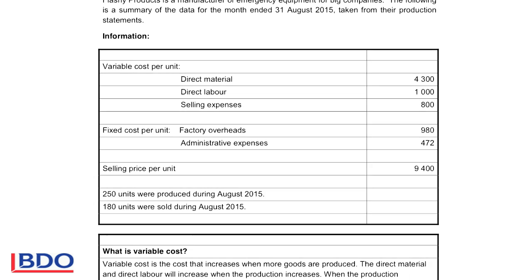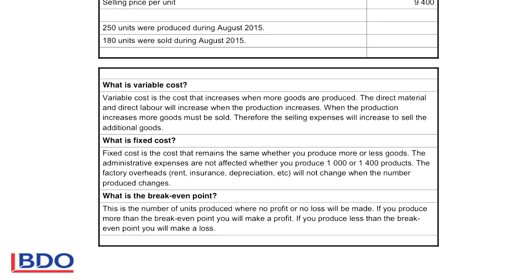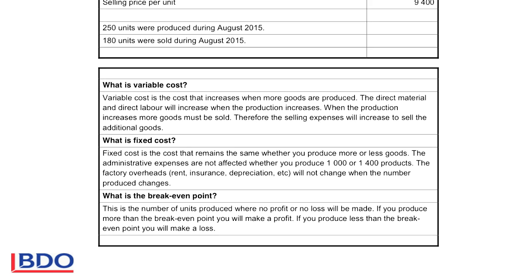If we look at the explanation of the various costs, variable costs is the cost that increases when you make more goods. Direct material and direct labor will increase when the production increases and more goods will be sold, so more selling expenses will be necessary.